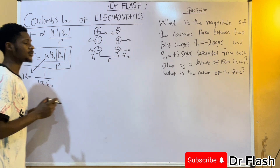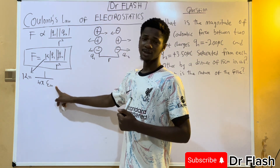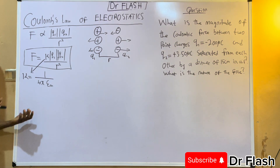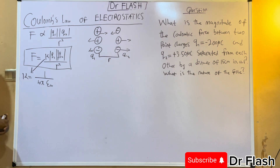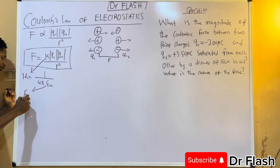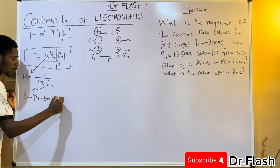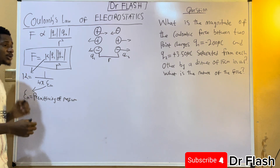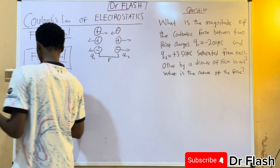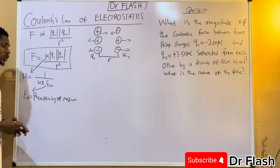Most students make the mistake of writing k as 1 over 4πε₀, where ε₀ refers to air or free space. I want you to take note that the correct formula uses εm — the permittivity of the medium. This medium could be anything: free space, water, oil, or any medium in which the charges are placed. That is what εm represents.